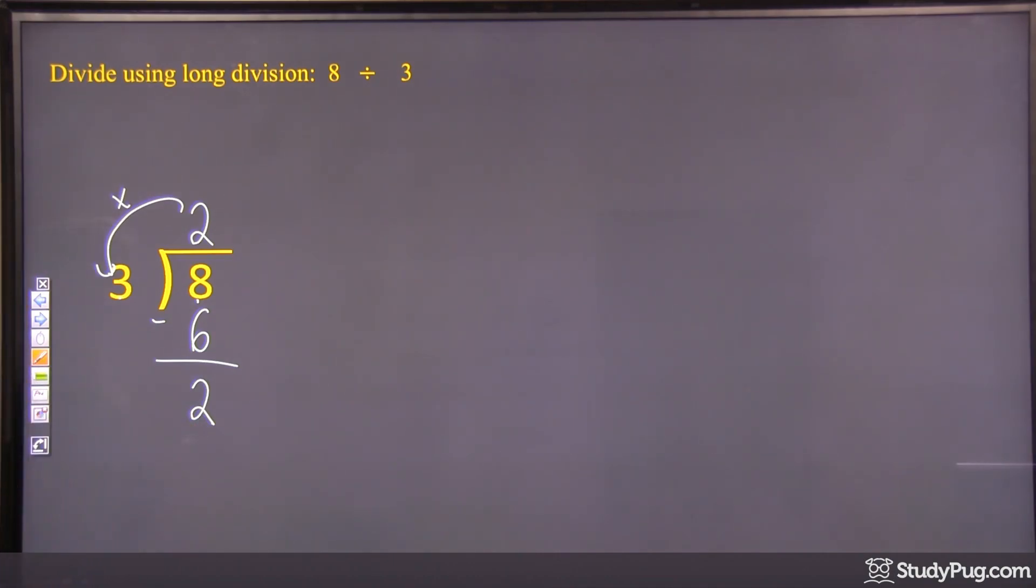So then our next step in long division would be to bring something down, right? But we have nothing left to bring down. We still have this 2 here, and 3 is not going to fit in 2. So what do we do here?